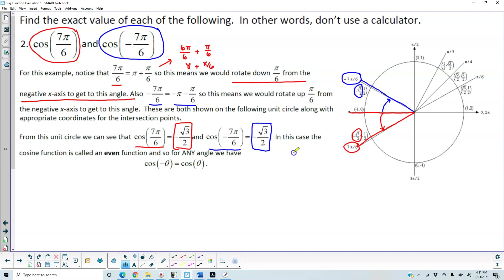So in this case, cosine function is called an even function. And so for any angle, we have cosine of negative theta is equal to the cosine of positive theta.